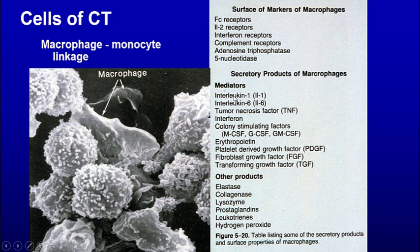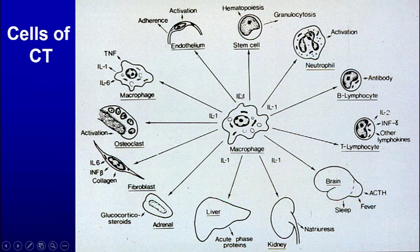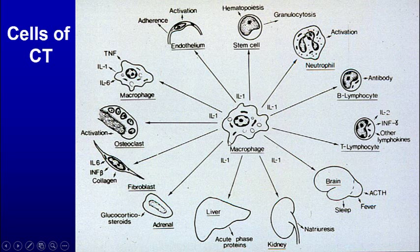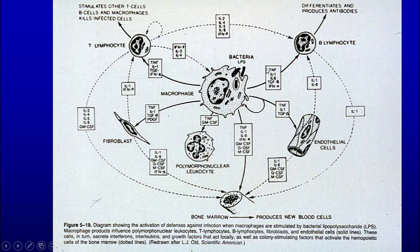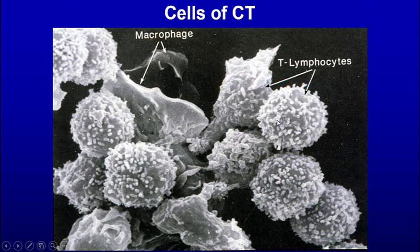Macrophages interact with other cells — they produce a host of mediators including interleukin-1 and interleukin-6, which cause other cells to react. Interleukin-1 works with the bone marrow, neutrophil activation, plasma cells being produced from B cells, T cells, affecting things in the brain, the liver, fibroblasts, and osteoclasts — just a host of different cells. You can see the various chemicals it produces and the different cells that react to it. Also, the macrophage is an antigen-presenting cell — it takes debris, chops it up, and presents that to other cells.